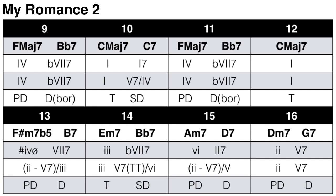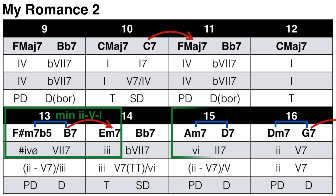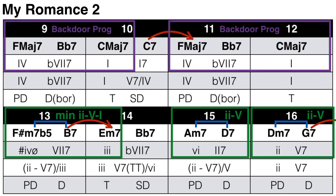For section B, we again find the 2-5 movements, 5-1 movements, all the 2-5-1s, the incomplete 2-5s, and the minor 2-5-1 in bars 13 and 14. Looking at bars 9 and 10, we start with F major 7 — the four chord, predominant function — which moves to a Bb7, a flat-seven dominant chord. This is a backdoor progression: the Bb7 is a borrowed chord from the parallel minor (C Aeolian) and functions as a plain dominant chord. So it's still a predominant-dominant-tonic in C; we've just used modal interchange to make it more interesting.